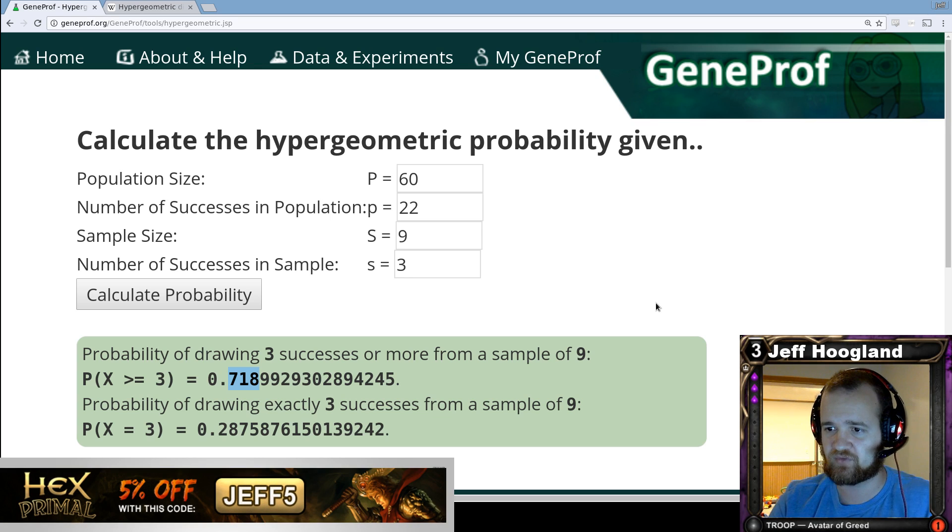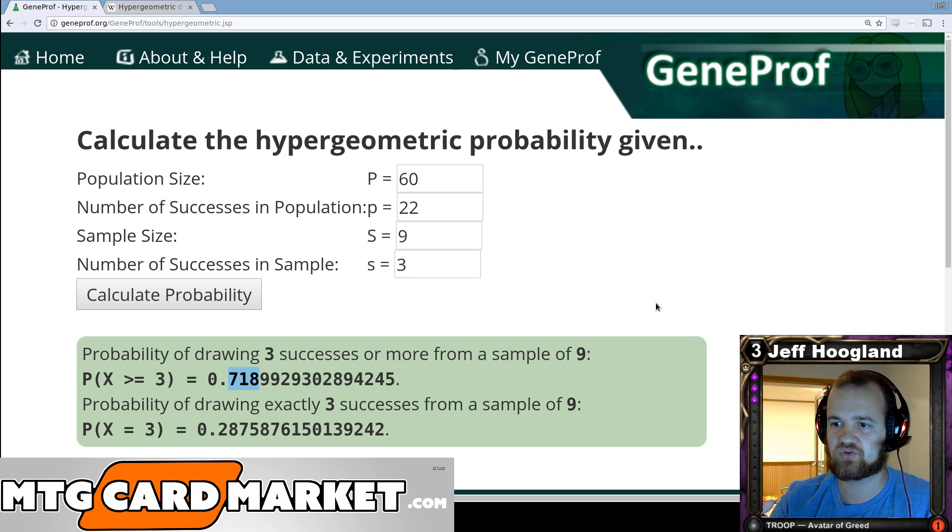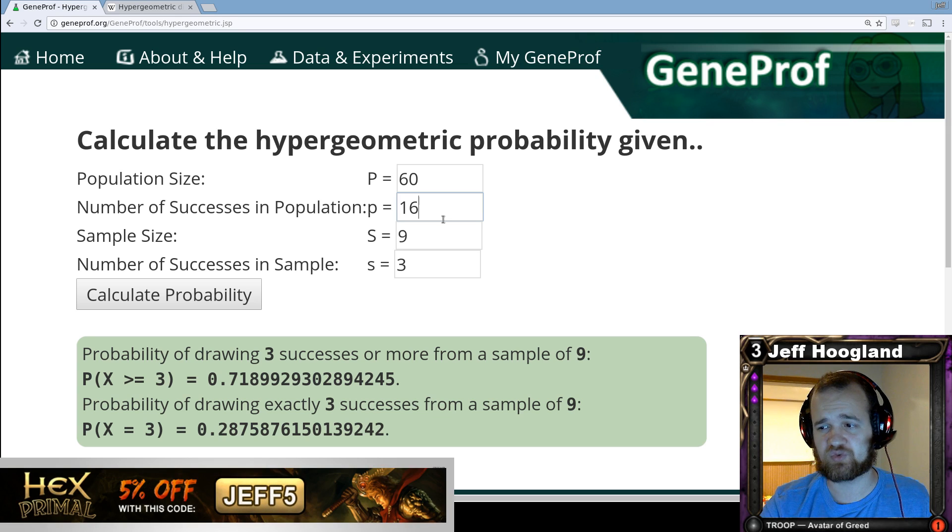For another example, this is one that's very common in standard decks in Magic right now. Casting the card Grasp of Darkness, which requires two swamps on turn two. I had a friend send me a deck list earlier today that had 16 black sources in it. And so we wanted to know what's the probability of being able to cast this Grasp on turn two with just 16 black sources.